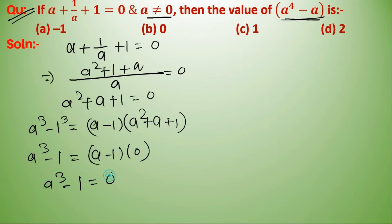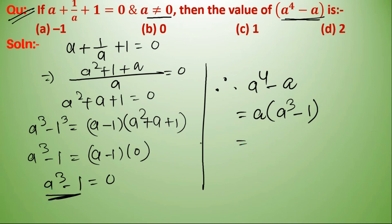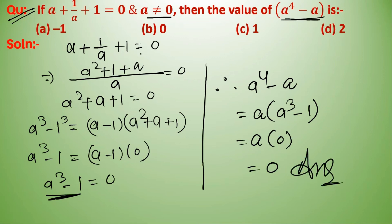Therefore a cubed minus one equals zero. So a to the power four minus a — taking a as common gives a(a cubed minus one), and since a cubed minus one equals zero, a into zero equals zero. So option B is the correct answer.